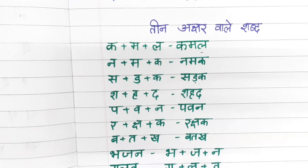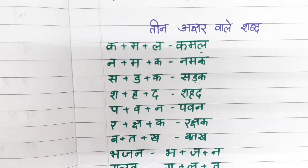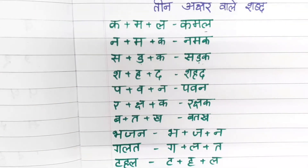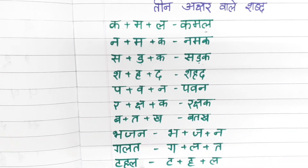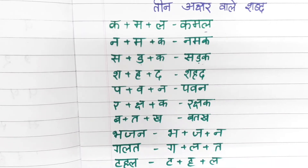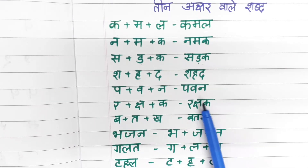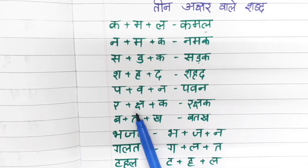I have written some words another way so you can learn how to break them open. Ga plus la plus ta is galat. Ta plus he plus la is tahel. So if you are mummies, for your child you can give this kind of question — write the split form and tell your child to form the word, or give the word and tell your child to break it. This is how you can check how they understand.